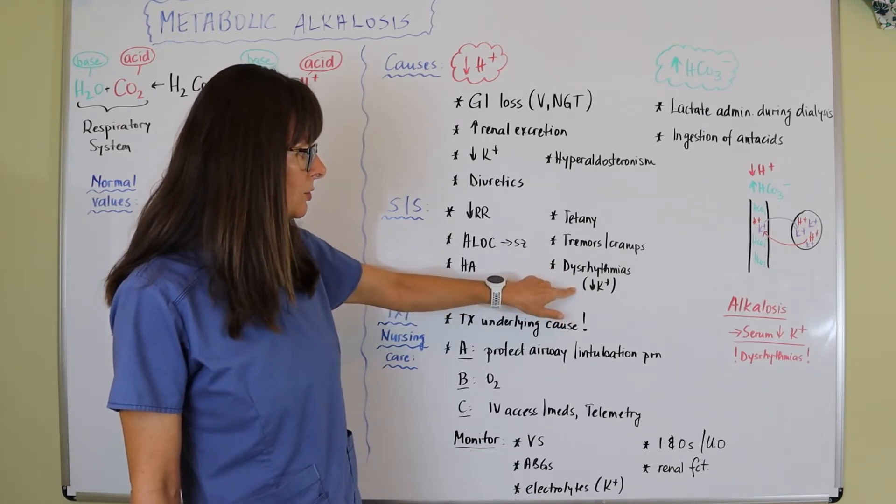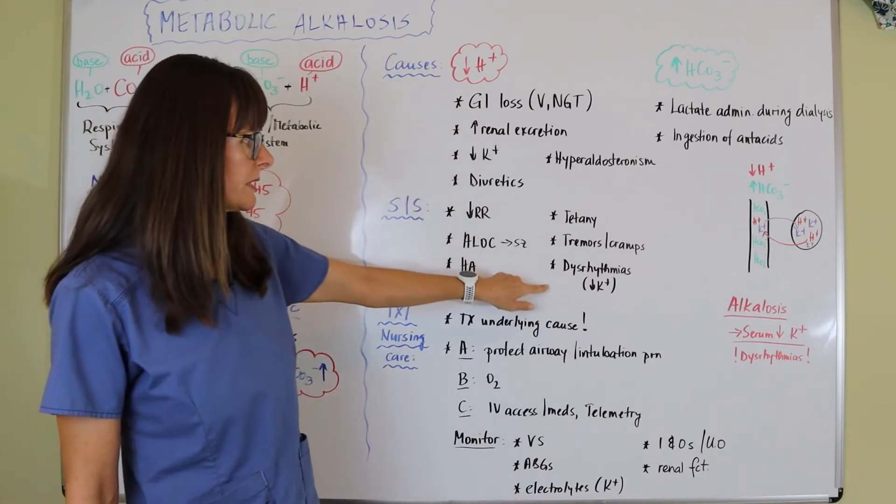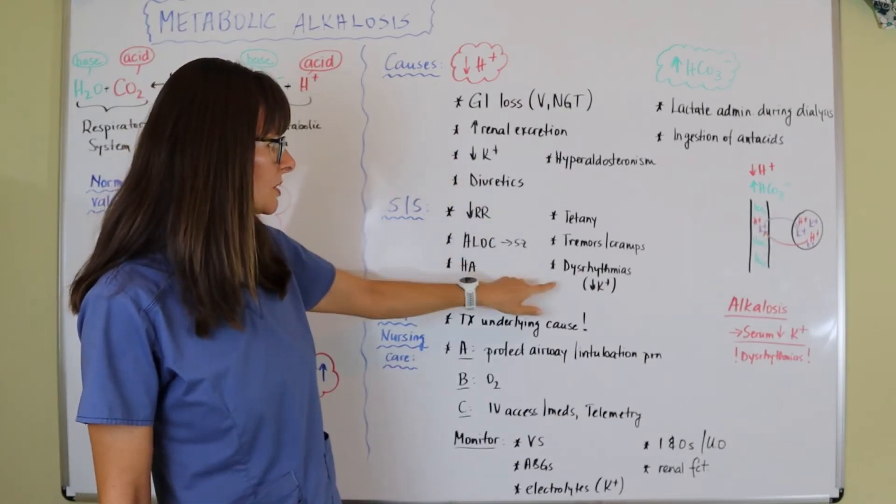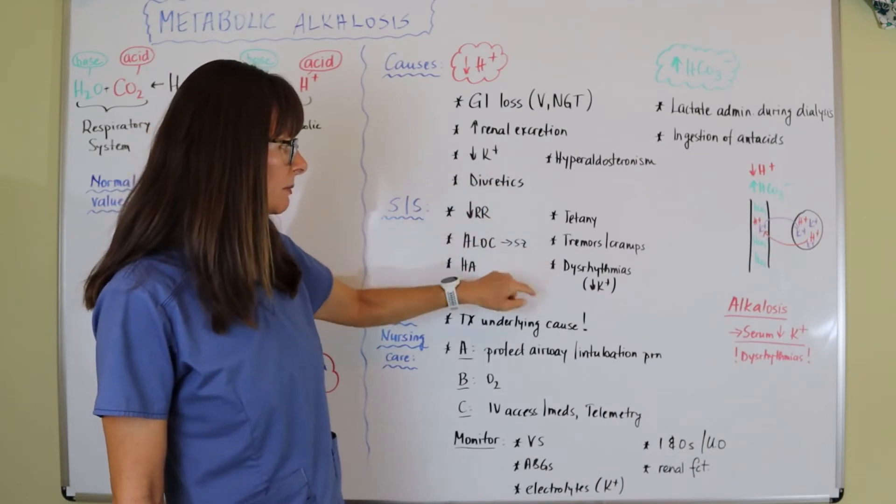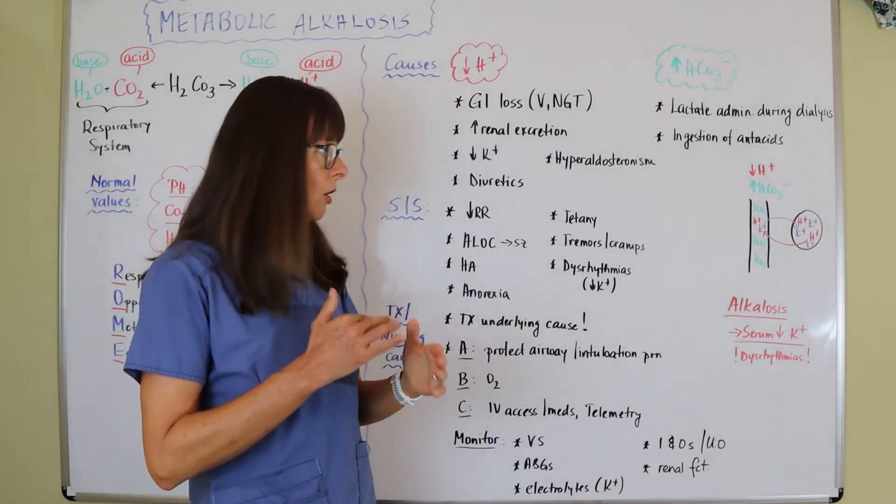Arrhythmias can lead to low serum potassium, or the cause can be serum low potassium. The potassium is low, but it can either be a symptom or a cause.